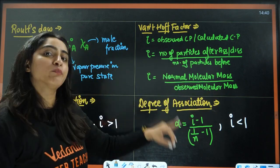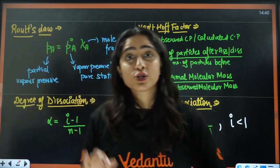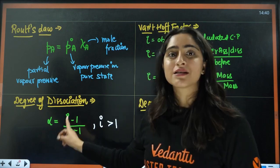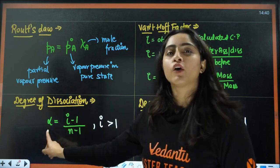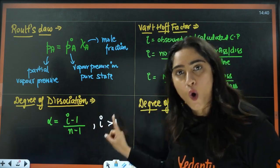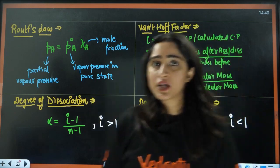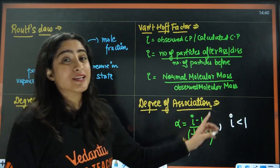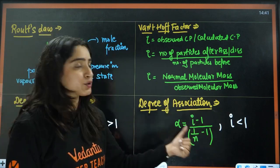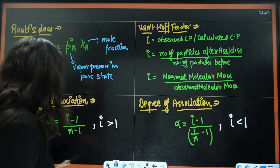Here you will calculate i and put it into the colligative properties. If there is dissociation, the colligative property is related to the degree of dissociation with this formula. The Van't Hoff factor is always greater than 1 for dissociation, and less than 1 for association. Here it is related to the degree of association with this formula.